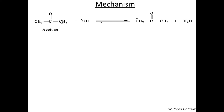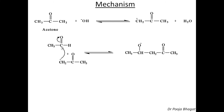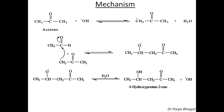Let us discuss the mechanism. Acetone — these are the alpha hydrogens — either of them will be extracted by the base to give this ion. This ion then attacks on the carbonyl carbon of the aldehyde and the double bond shifts here. This carbon will have methyl and hydrogen with single bond O⁻, bond between this carbon and CH₂, and the molecule CH₂COCH₃. Then O⁻ will extract a proton from the water molecule to give this OH.